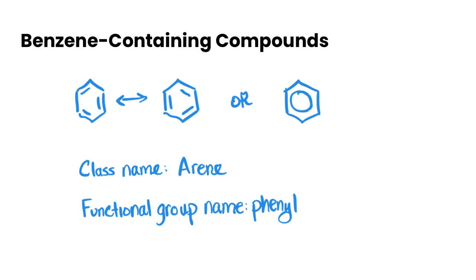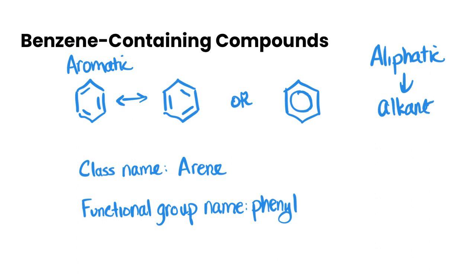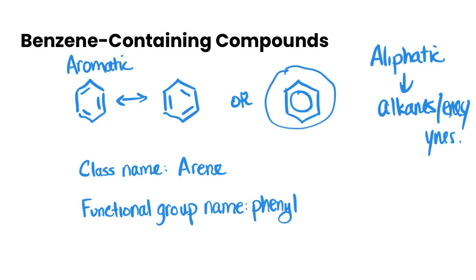The last class and functional group we need to cover are compounds containing benzene. Benzenes are a class of molecules considered to be aromatic — aromatic means they have a benzene ring with alternating double and single bonds, though as we know those bonds are actually all the same length because of delocalized pi electrons. If a compound doesn't have a benzene ring, it's called aliphatic — so aliphatic compounds include alkanes, alkenes, and alkynes. You can draw resonance structures for benzene or draw it as a hexagon with a ring in the middle, where the ring denotes those delocalized pi electrons.